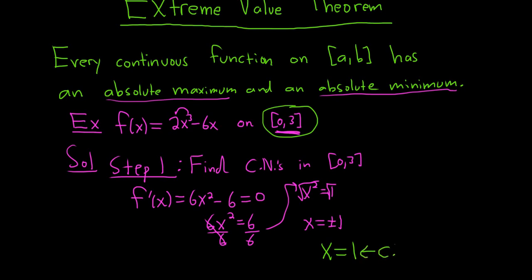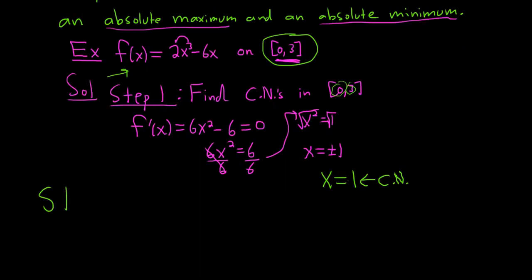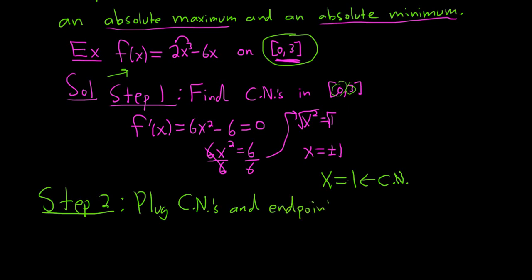Now we just have to figure out if it's actually a maximum, minimum, or nothing at all. What we do is take the critical number and plug it into the function along with the endpoints. Step 2: plug the critical numbers and the endpoints — a = 0 and b = 3 — into f(x). The biggest number is the max and the smallest is the min.